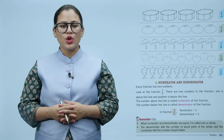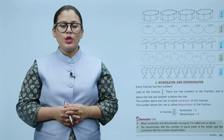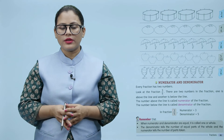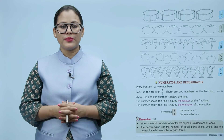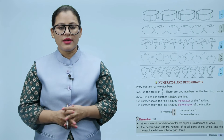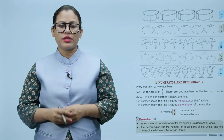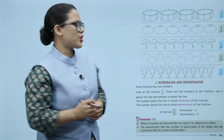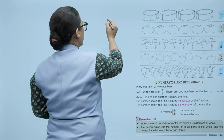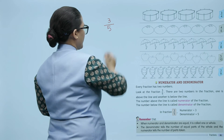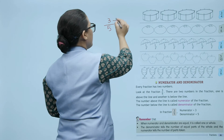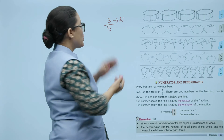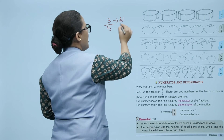Numerator and denominator: every fraction has two numbers. Look at the fraction 3 by 5 — there are two numbers in the fraction, one above the line and another below the line. The number above the line is called the numerator of the fraction; the number below the line is called the denominator. Har fraction mein do numbers hote hain — ek line se oopar aur ek line ke neche. Jo line se oopar hai usse numerator kahte hain aur jo line se neche hai usse denominator kahte hain.